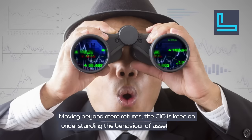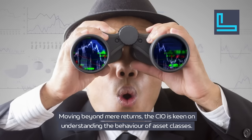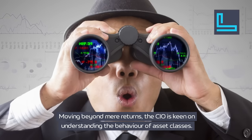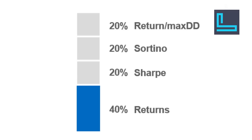Moving beyond mere returns, the CIO is keen on understanding the behavior of asset classes. Like fund pickers who use various metrics to characterize a fund's behavior, we consider not only returns but also assess returns relative to factors like max drawdown, downside risk (denominator of the Sortino ratio), and volatility (denominator of the Sharpe ratio), to characterize the behavior of asset classes.